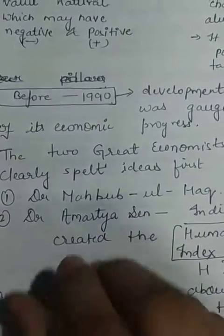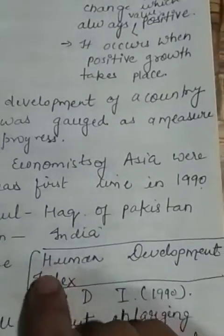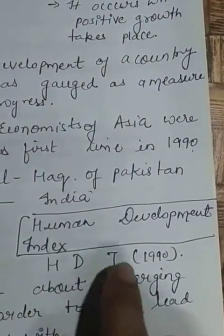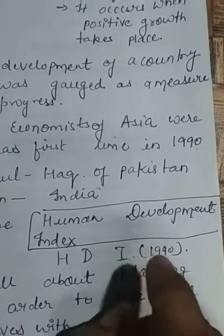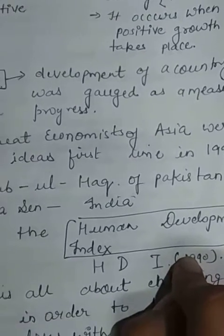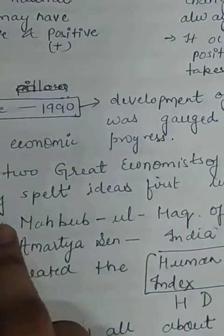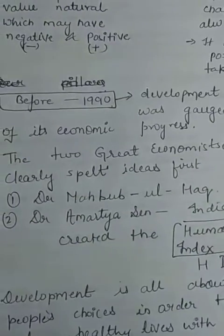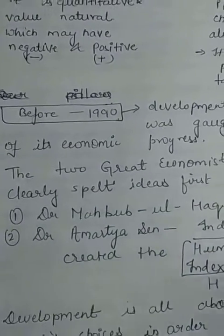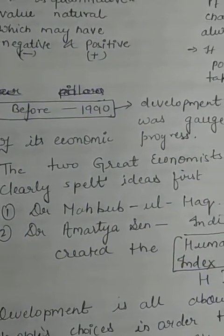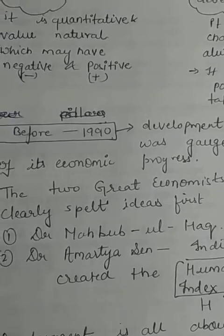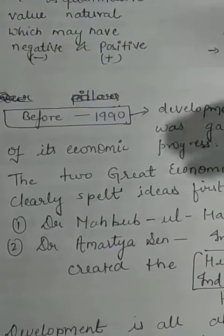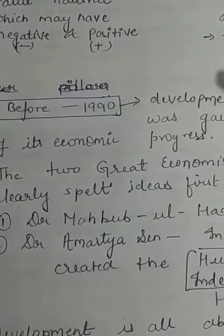These two famous economists presented the ongoing discussions about development in a proper framework and gave us the Human Development Index, or HDI, in 1990. Dr. Mahbub ul-Haq from Pakistan and Dr. Amartya Sen from India, through their research, presented the discussions that had been going on before the 1990s.